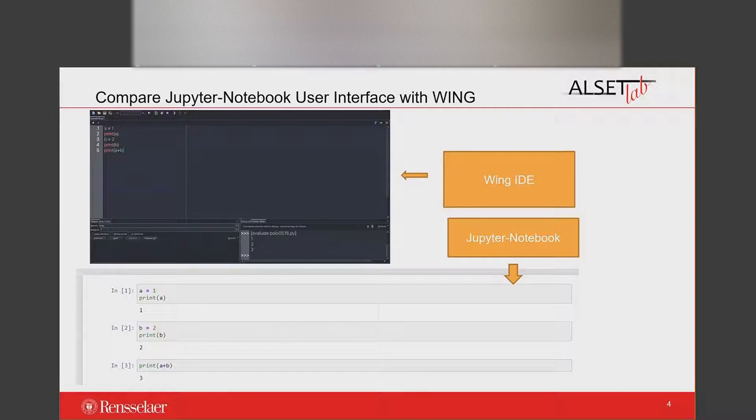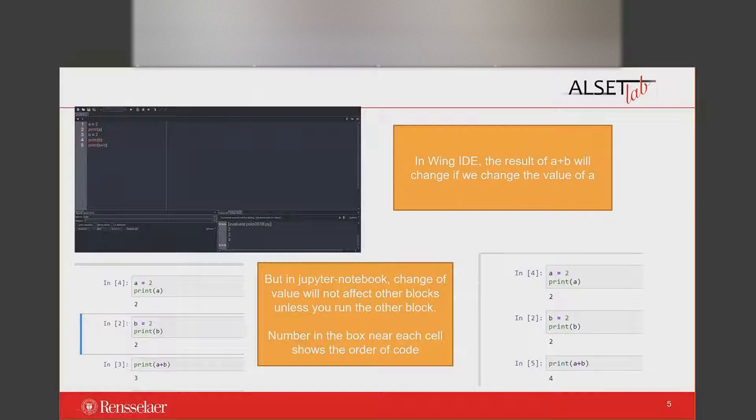Moreover, different blocks share the same space, which means that the variables in different blocks are interconnected. In the example with an IDE, if we change the value of A to 2, the result of A plus B will also change. But in Jupyter Notebook, change of value will not affect results in other blocks unless you run the other cell.